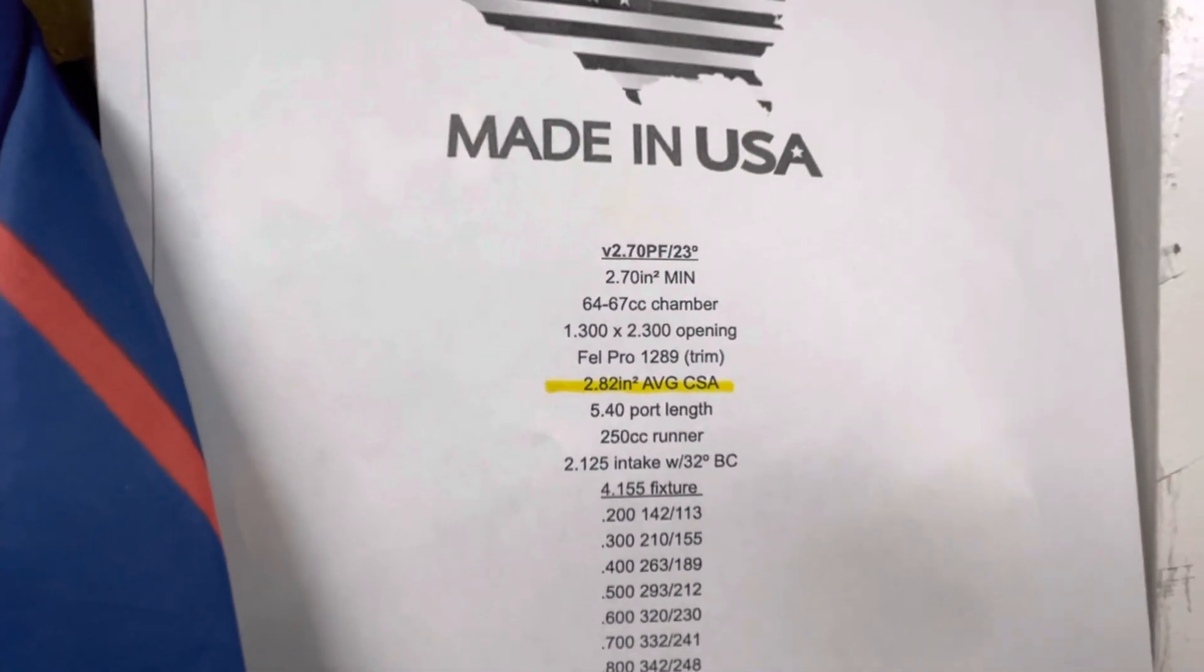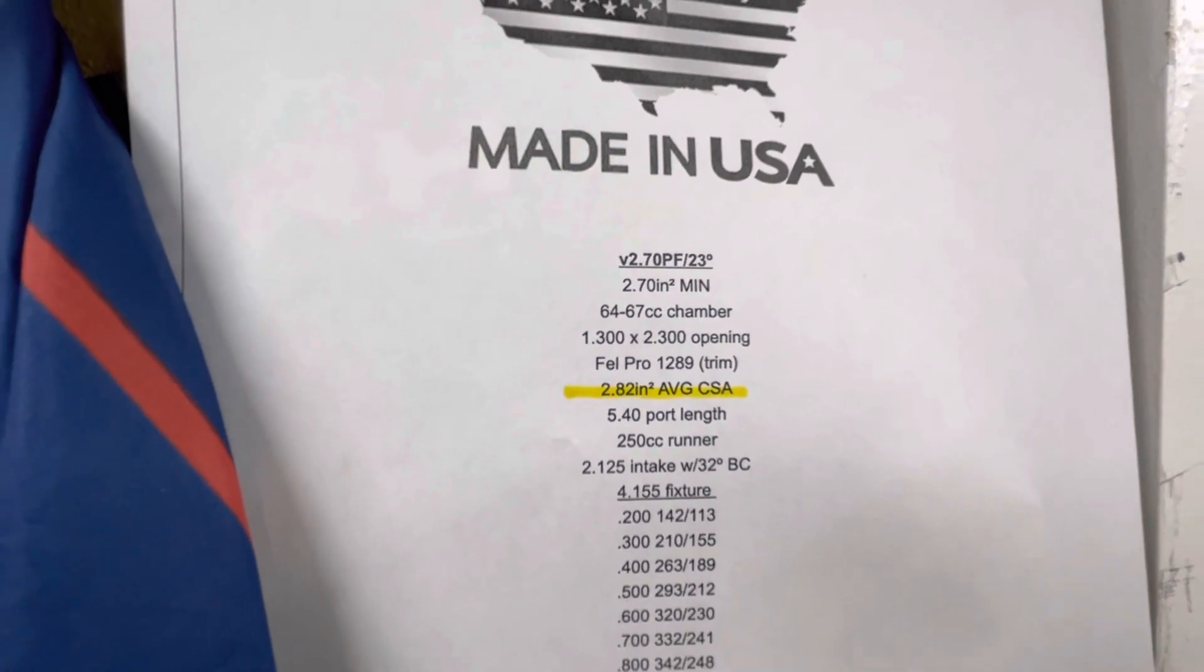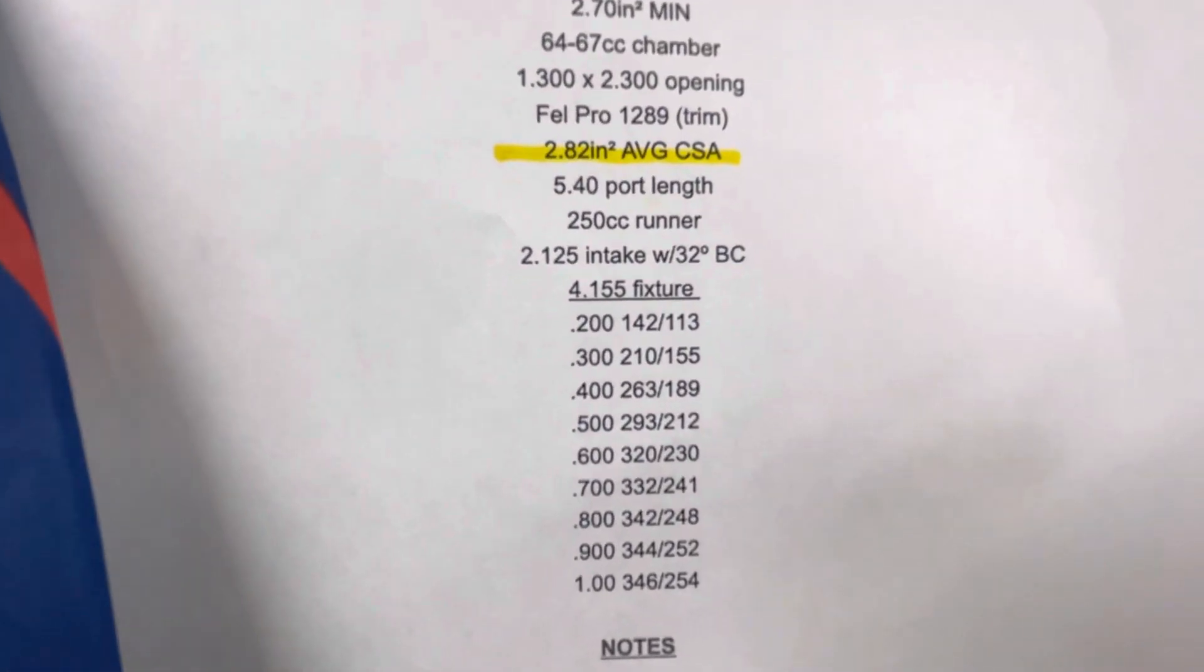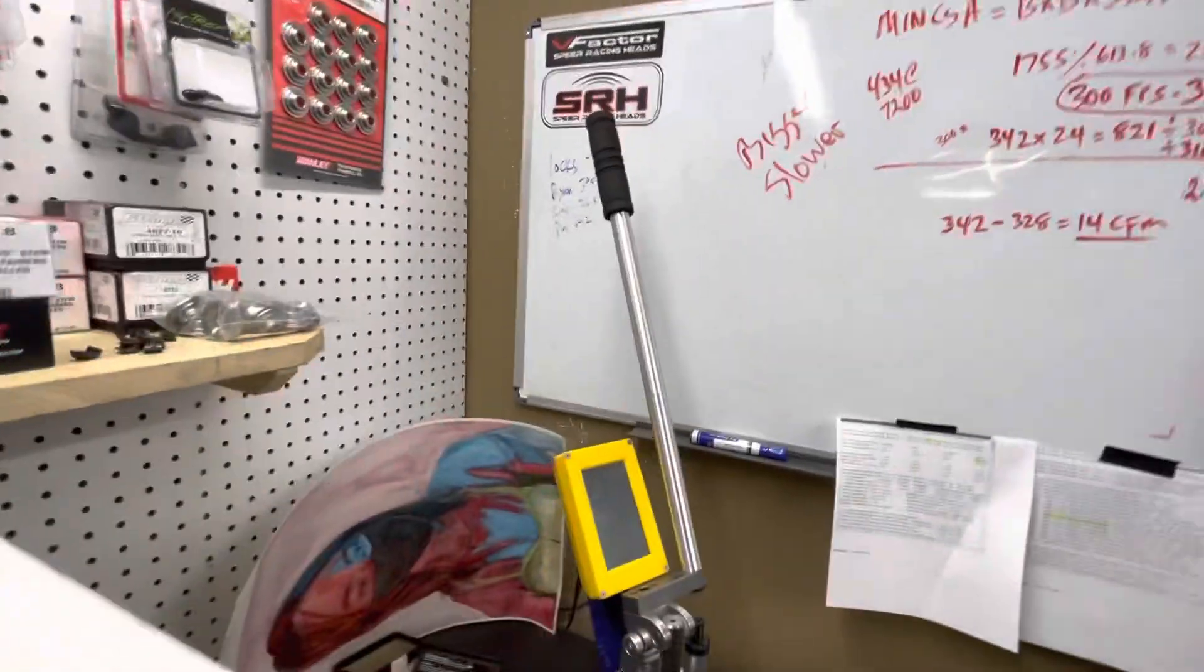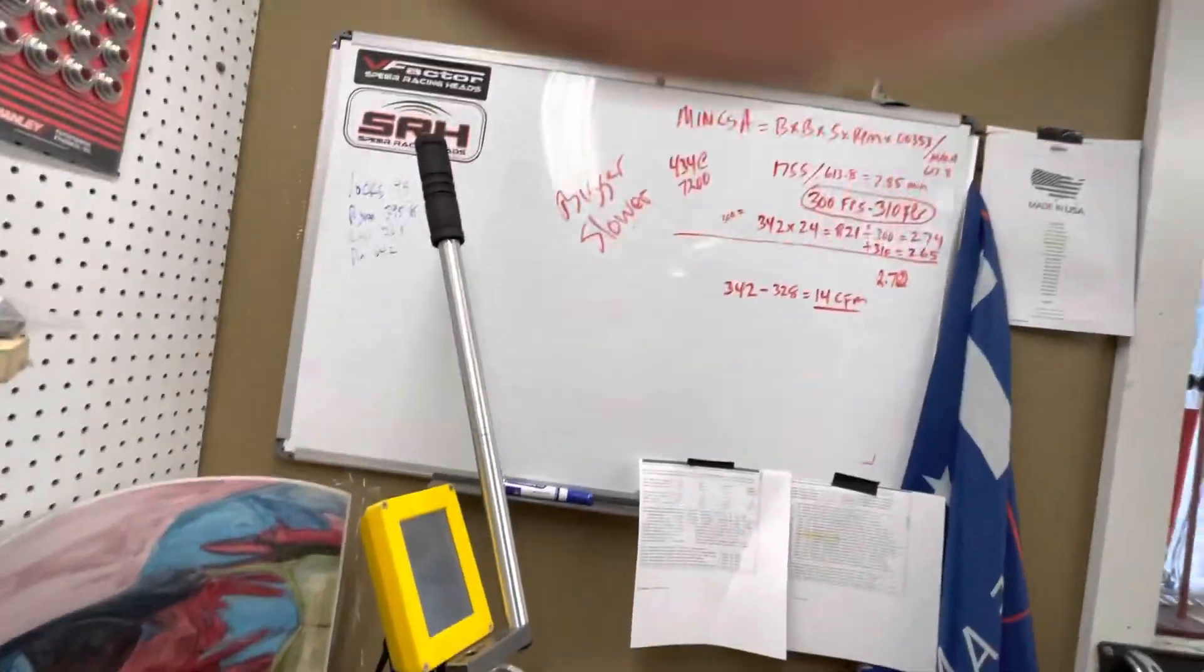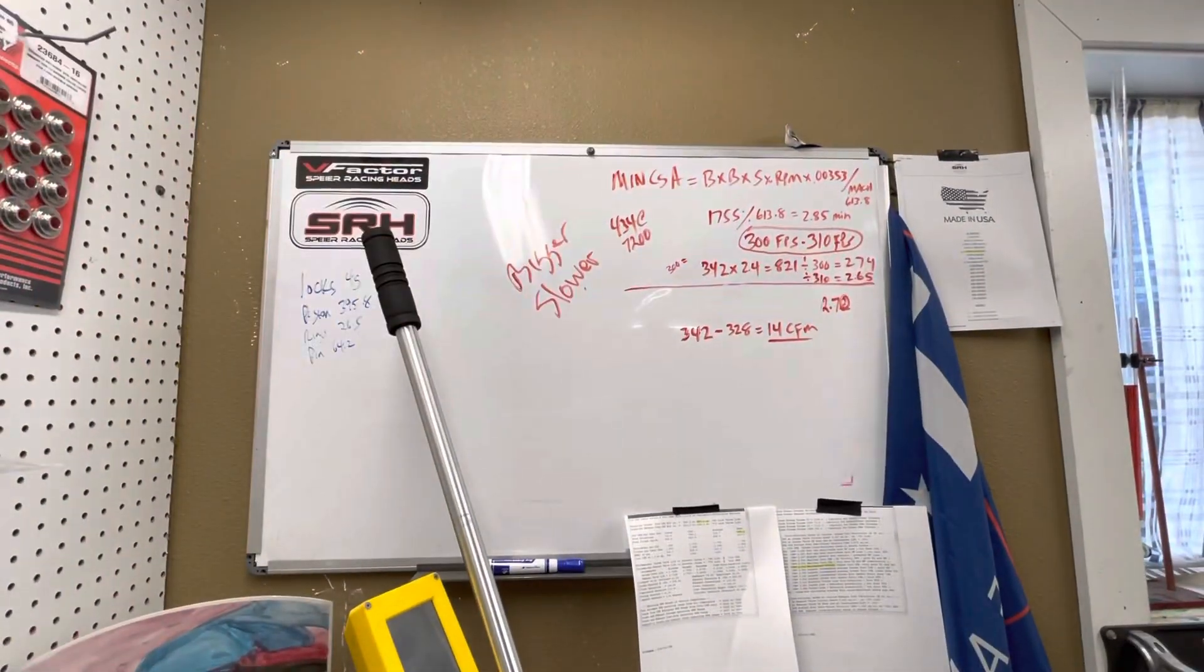Run all those numbers. Remember I talked about average cross-section? Pipe Max recommended average intake port cross-section, the yellow highlighted recommended CSA: 2.82. Oh man, 2.82.